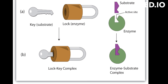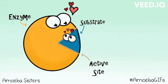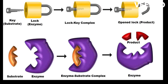What is the lock and key hypothesis? The lock and key hypothesis is a model that explains how enzymes and their substrates interact. The key represents the enzyme and the lock represents the substrate. The key and lock are specific to each other, meaning that the enzyme can only catalyze a specific reaction with a specific substrate.